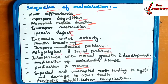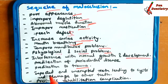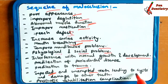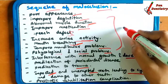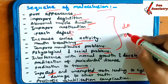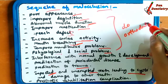Predilection of periodontal disease, predilection of trauma — these will occur, and impacted and unerupted teeth can lead to cyst formation. Prosthetic rehabilitation complications will also occur. To compensate for these things, we do orthodontic treatment.